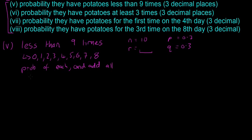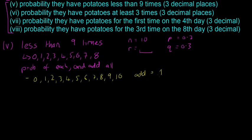Here's the key idea: if you find the probability of 0, 1, 2, 3, 4, 5, 6, 7, 8, 9, and 10 and add all of them together, the result equals 1. Each individual case gives a decimal, but when you add every individual case together you get 1 as the total probability — because something will definitely happen.